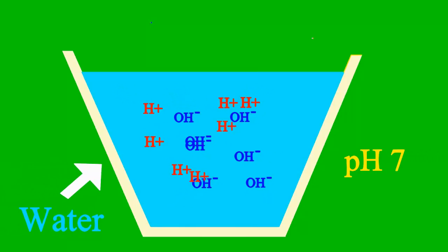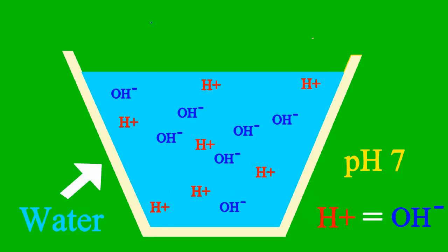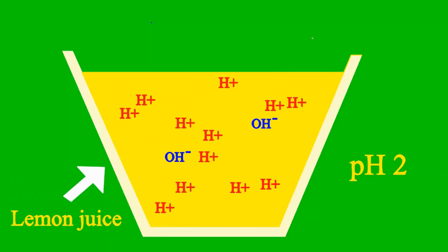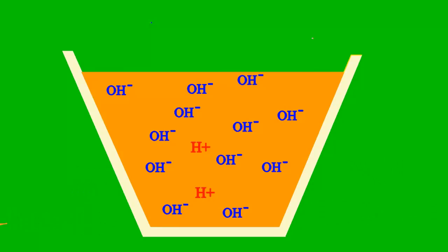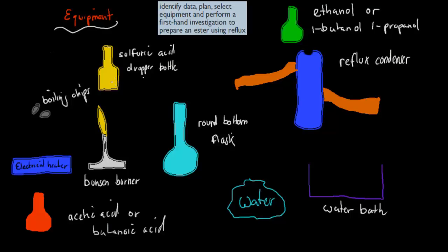When the pH is 7, then it's a case where the sample is neither an acid nor base. But less than 7, it's an acid. More than 7, it's a base all the way. I'm going to go straight into that dot point. The dot point itself is an experiment you've done to make your own ester. It says identify data, plan selected equipment, and perform a first investigation to prepare an ester using reflux. So you have to prepare an ester using reflux. That was the actual experiment.